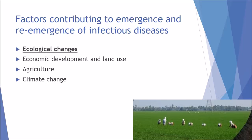Now we'll discuss factors contributing to the emergence and re-emergence of infectious diseases. One major factor is ecological change — including economic development and land use. As populations expand and take up more land, they are exposed to environments where bacteria could have been living in isolation, and introducing humans to these areas can lead to transmission into human hosts. Agriculture, deforestation, and land grabbing can disrupt environments, allowing pathogens to enter humans. Climate change also plays a role — as global temperatures rise, mosquito ranges in Africa are expanding, and malaria could eventually spread to southern Europe or parts of South America.